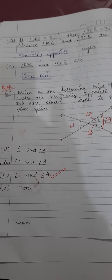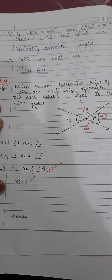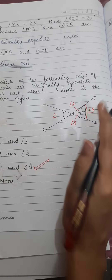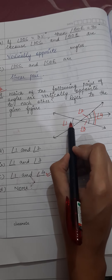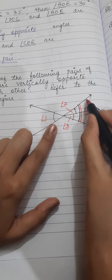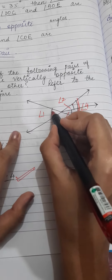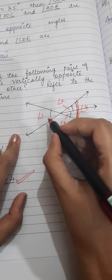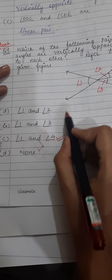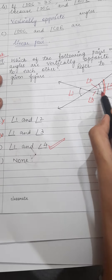Question number 9: you just have to tick the correct answer — which pair of angles are vertically opposite? Looking at the figure, angle 2 is half of one complete angle, angle 3 is half of another, and angle 4 is a complete angle. Angle 1 is vertically opposite to angle 4. So options 1 and 2 are wrong, 1 and 3 are wrong, and the correct answer is angle 1 and angle 4 are vertically opposite angles.